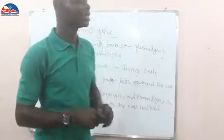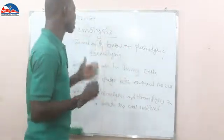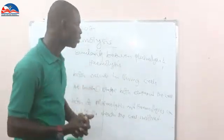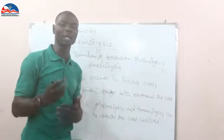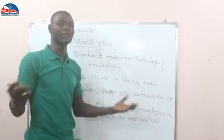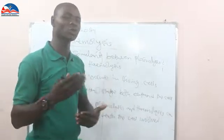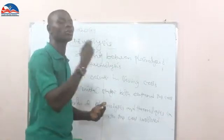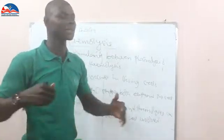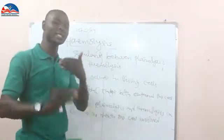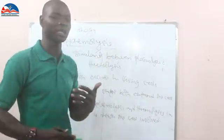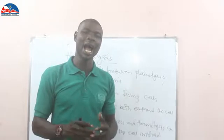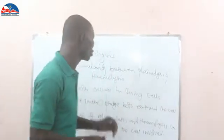So those are the similarities between plasmolysis and hemolysis. To recap: plasmolysis is the withdrawal of water or the outward movement of water from a living cell, causing the cytoplasm and the cell to shrink. Hemolysis is when excess water gets into the cells — specifically the red blood cells — to the extent that the red blood cell is fully charged with water and gets burst.